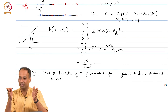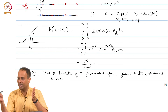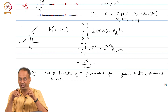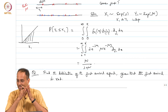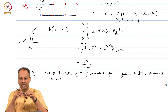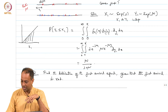So the first arrival epoch is exponentially distributed with parameter lambda plus mu, and the first red arrival epoch is exponentially distributed with parameter mu. But that is not what I am asking. I am asking the distribution of the arrival epoch given that the first arrival was red.